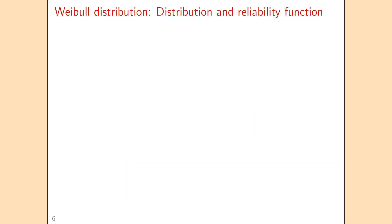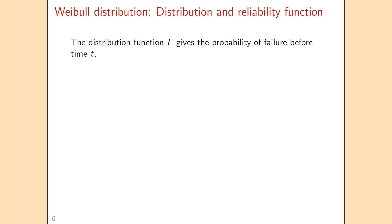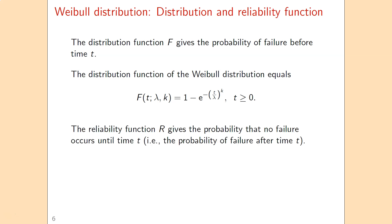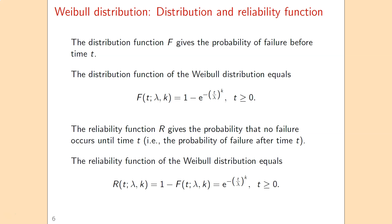The distribution function, denoted by capital F, gives you the probability of failure before time t. For the Weibull distribution, that's defined by a specific formula. The reliability function, denoted by capital R, gives you the probability that we survive until a certain time t — the probability that failure does not occur until time t. That is 1 minus capital F, and taking 1 minus the distribution function, the 1 cancels out and the second part becomes positive.